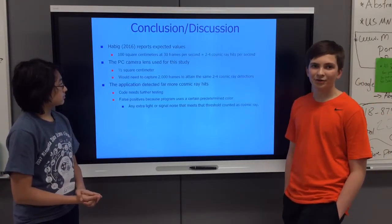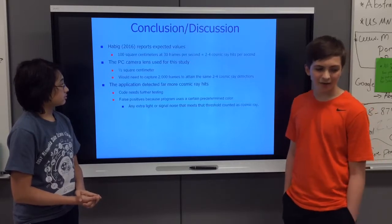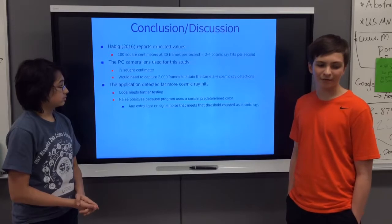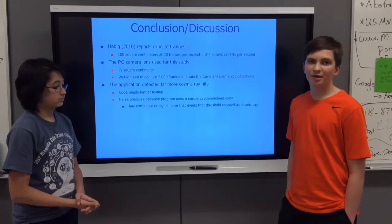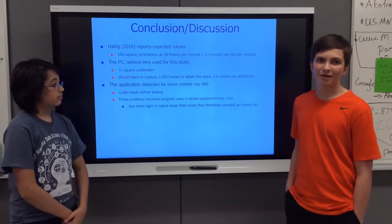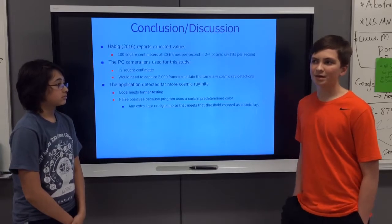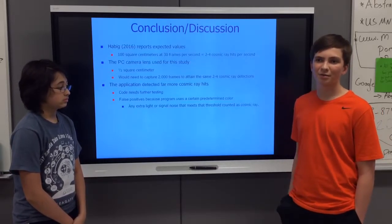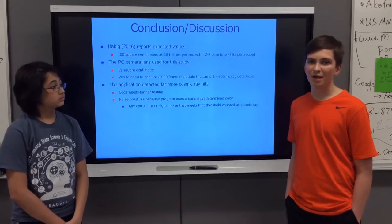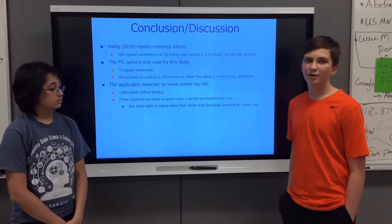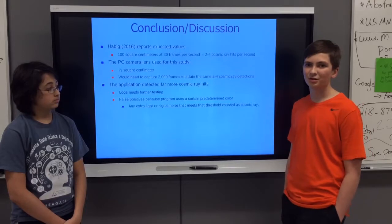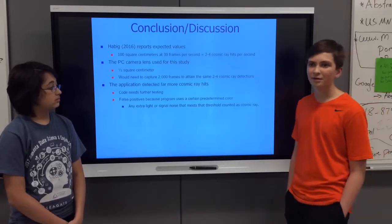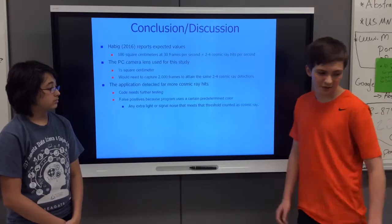A physicist named Dr. Alec Habig said that if we take 100 square centimeters at 30 frames per second, we should be detecting two to four cosmic rays. That means that if we take about 2,000 images, we should expect the same results. Since our average was somewhere around 1,200 detections, we know that we need to increase the RGB values to accurately detect cosmic rays.